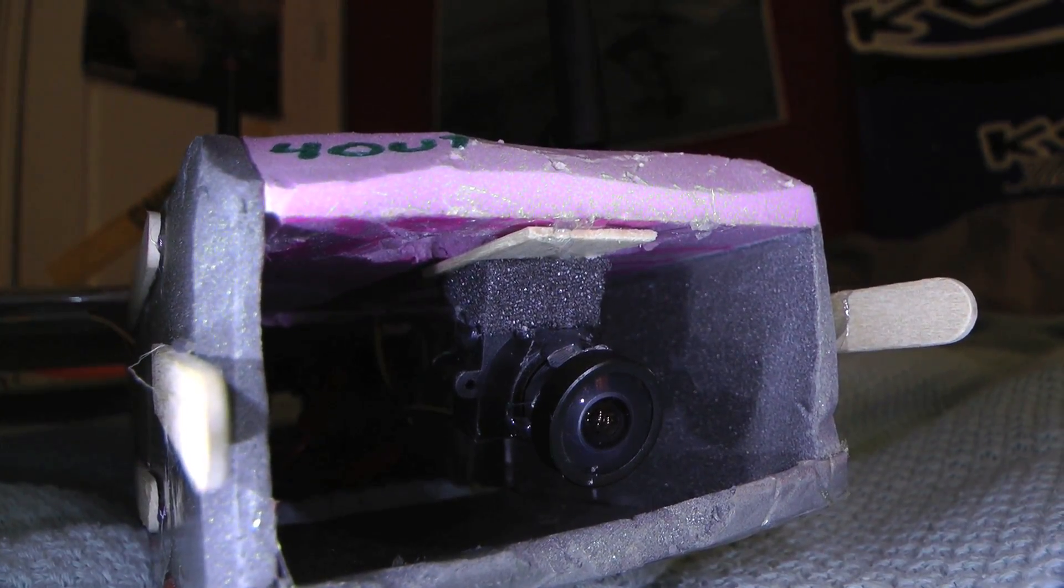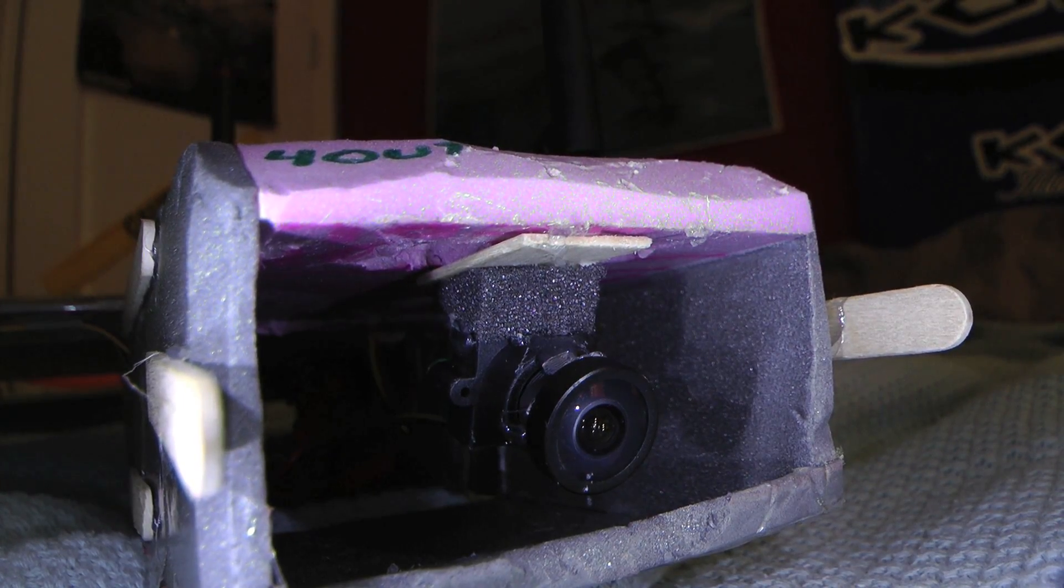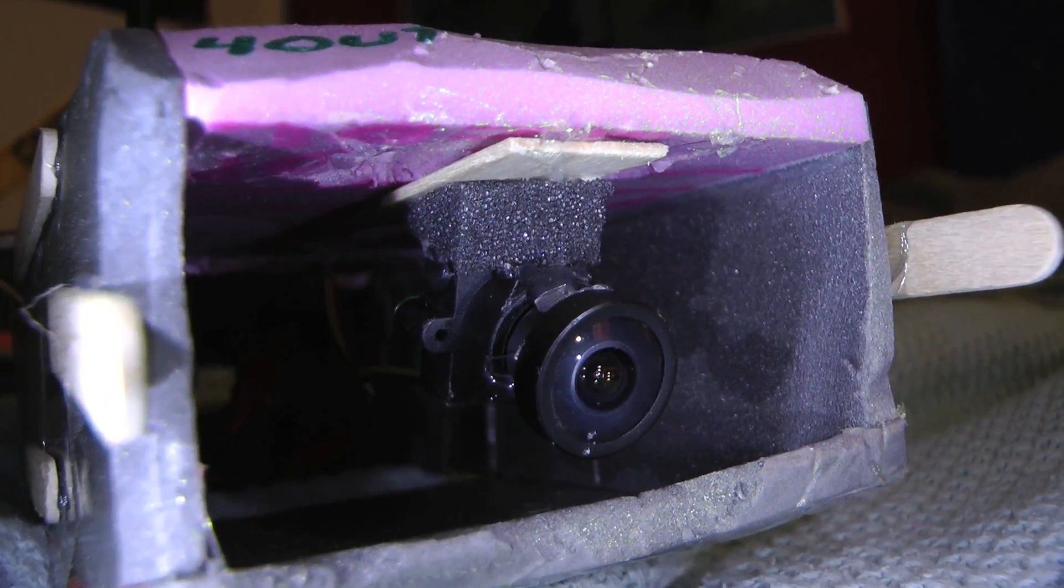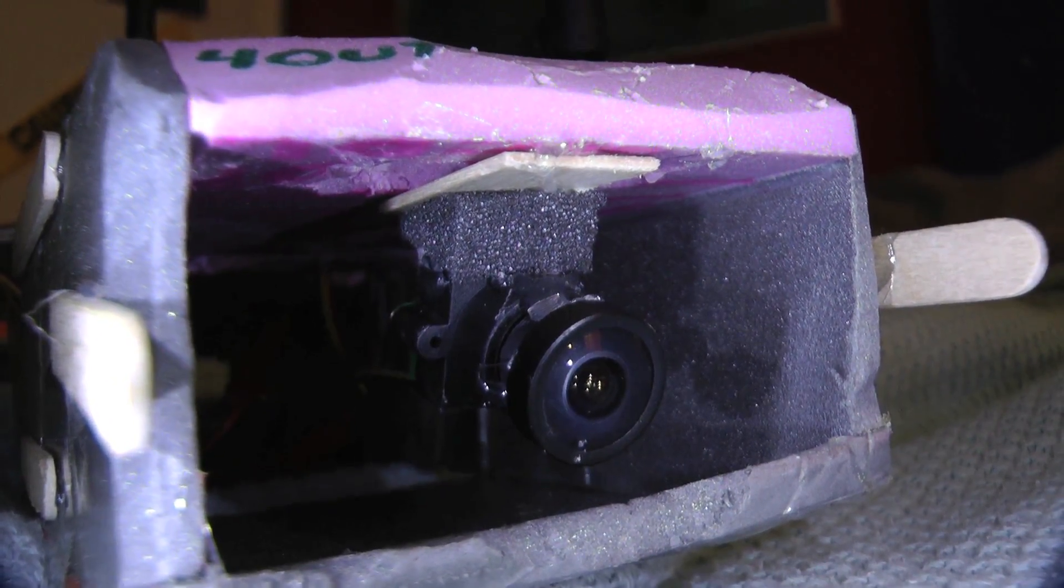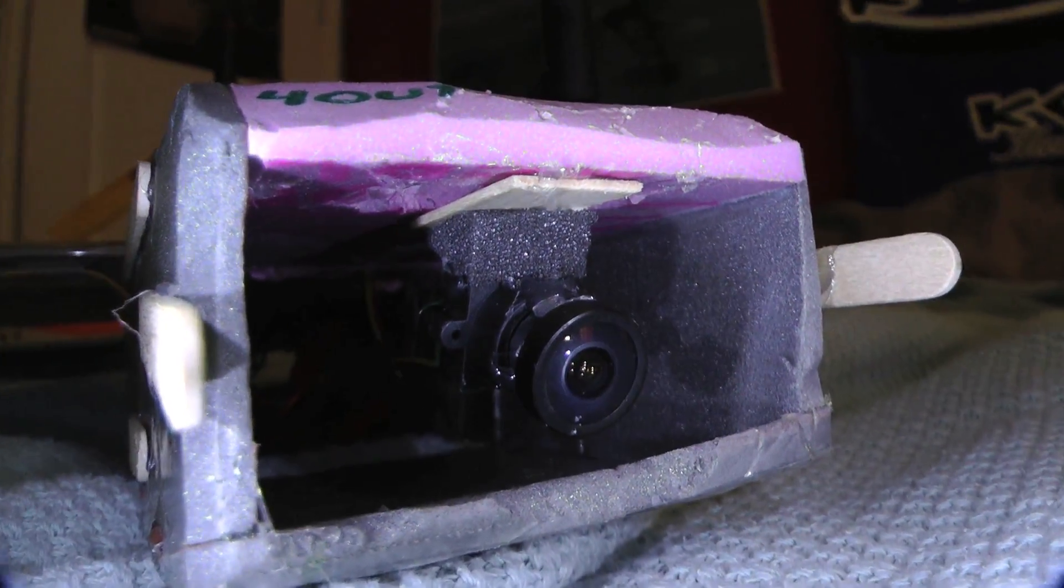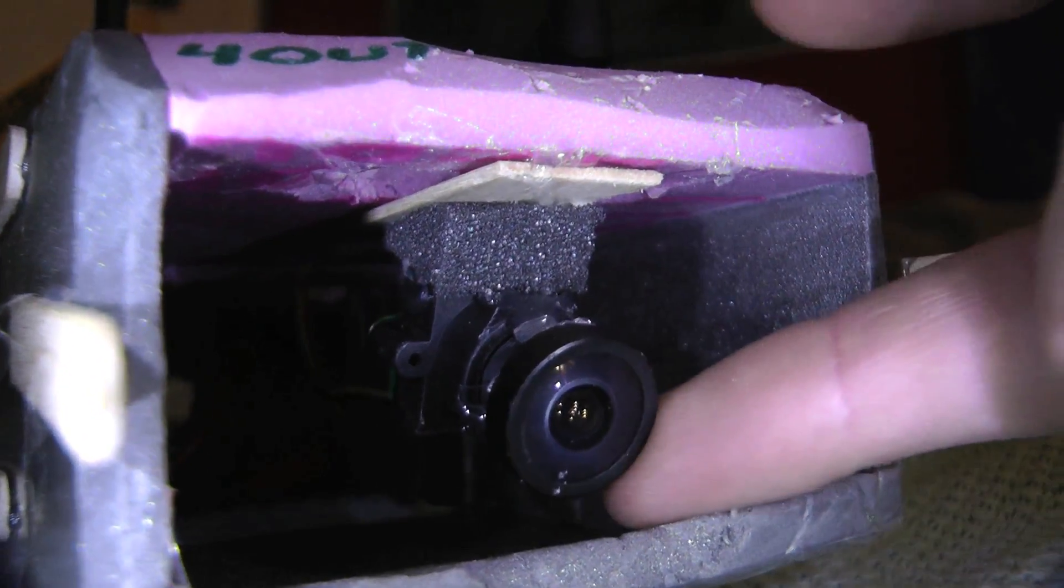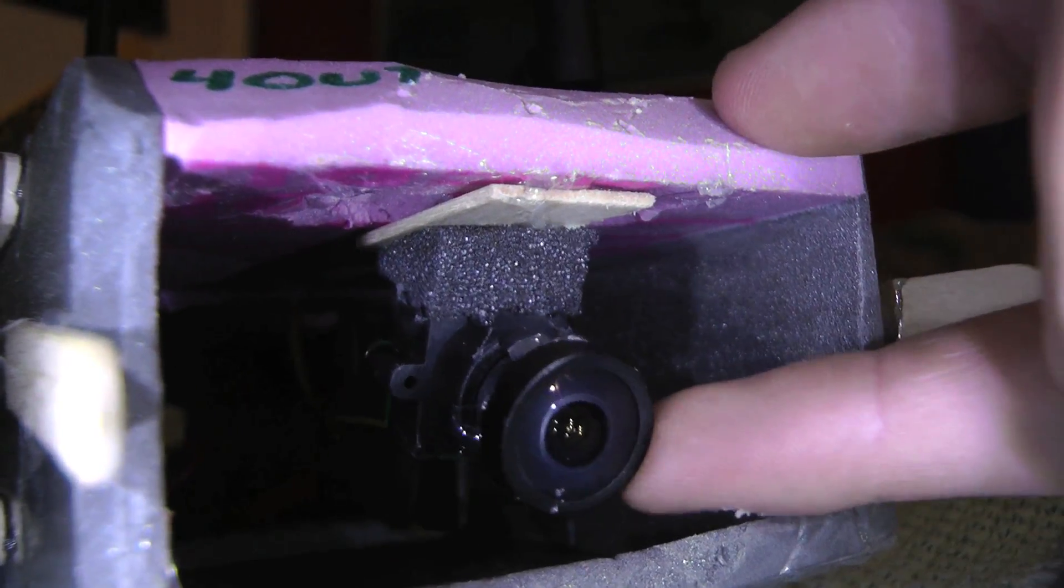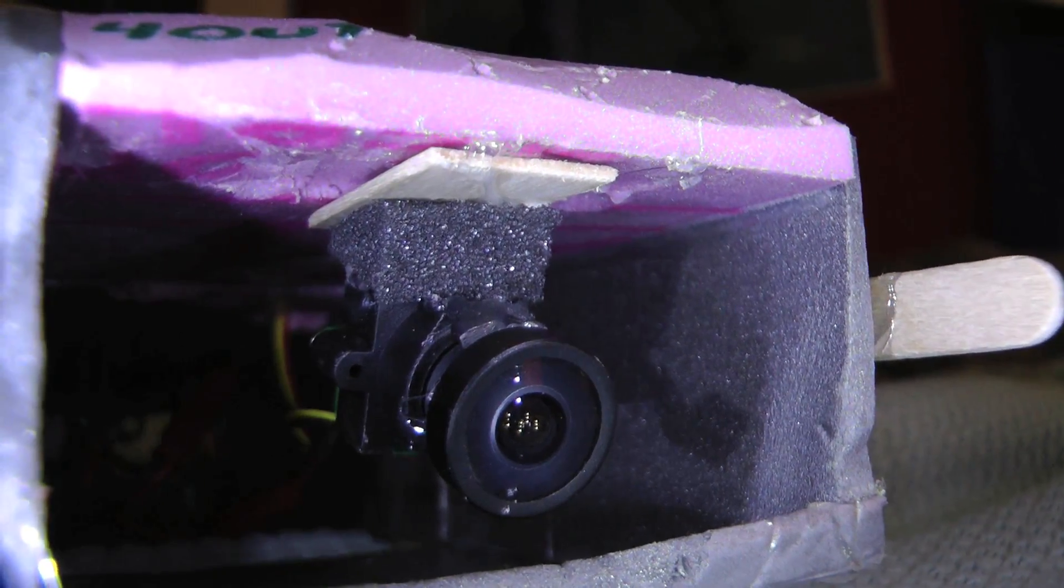It is a 520 line camera, so it's pretty good resolution, and it is a CMOS sensor. It's not a CCD sensor. The downside to that is that it's a little bit more prone to vibration, so I have it mounted on a piece of foam here, so that vibrations won't affect it as much.